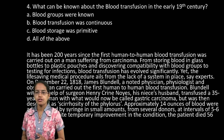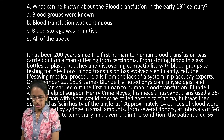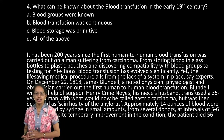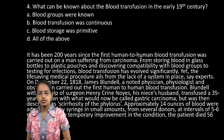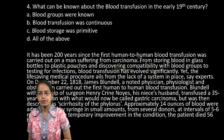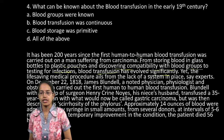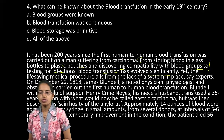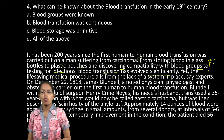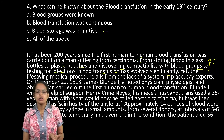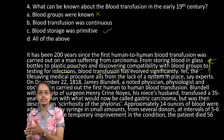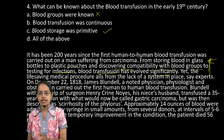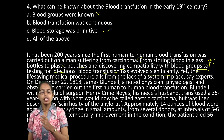Devraj has C as the correct answer. How? From storing the blood in bottles to plastic pouches and discovering the compatibility with blood groups, testing for infection — blood transfusion has evolved significantly. That means the most primitive thing known was storing. So blood storage was primitive — that's correct. Blood groups were known — that is incorrect because that has evolved historically; compatibility with blood groups has evolved. Blood transfusion was continuous — also incorrect, because in the last sentence, 14 ounces of blood were administered by syringe in small amounts, meaning it was not continuous. So B is also incorrect, and C is the correct option.